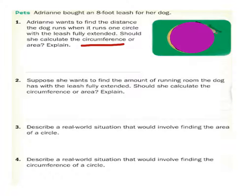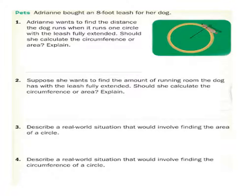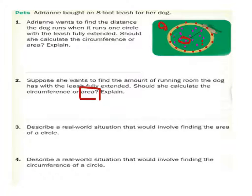Number two asks about how much running room the dog has with the leash fully extended. Since it has to do with space, she's going to want to find the area. If the dog were sitting here, that's fine, but it certainly couldn't sit over there — that's a matter of space. Whereas if she wants to know the distance with the leash fully extended, then the dog will only be along one specific point. In space, the dog can be anywhere within the perimeter, or in this case, the circumference.